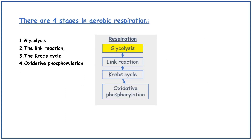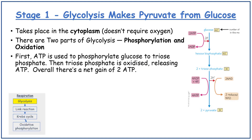There are four stages in aerobic respiration: glycolysis, the link reaction, the Krebs cycle, and oxidative phosphorylation. Stage one is glycolysis, where pyruvate is made from glucose, and it takes place in the cytoplasm of a cell.